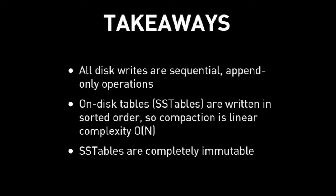The takeaways here are that all writes in Cassandra are sequential, append-only operations — Cassandra does no writes as random IO. These on-disk tables are written in sorted order, so merging them for compaction is a very fast, linear complexity operation. SS tables are actually immutable — once they've been written to disk and flushed out, we know they'll never be modified again.